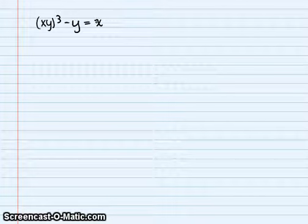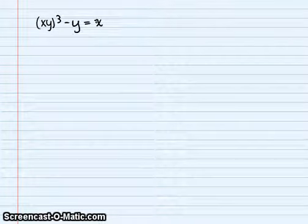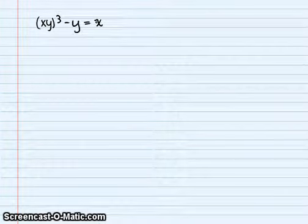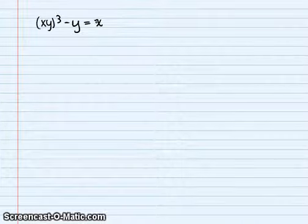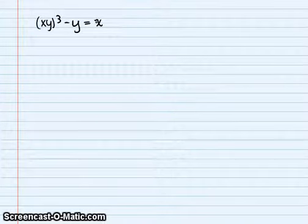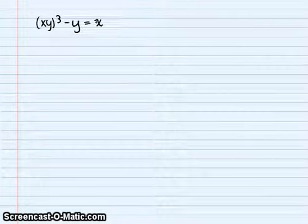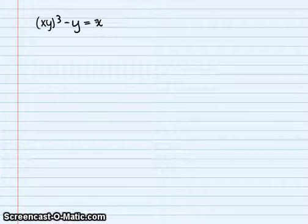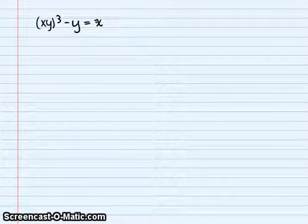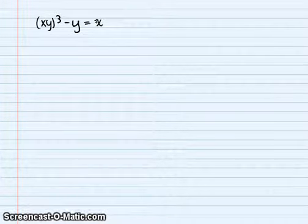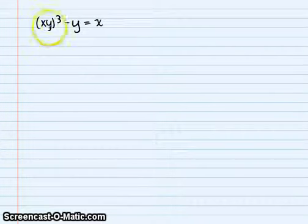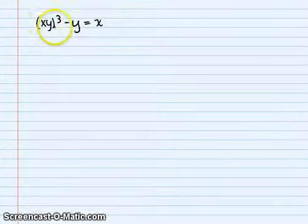All of the rules that we learned before — chain, product, quotient — all that stuff is still going to apply here, but now we have x's and y's so it's a little bit confusing. Our first step is we want to differentiate this just as it is. We don't want to mess around with it, just differentiate it, and then we'll deal with that once we've done that.